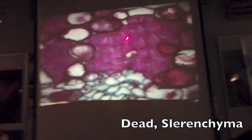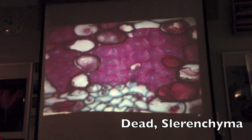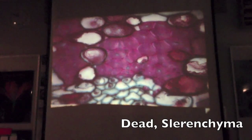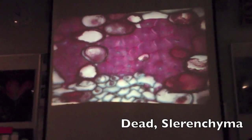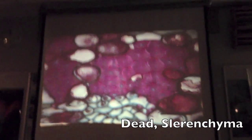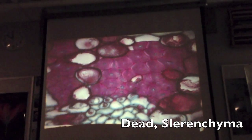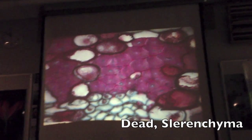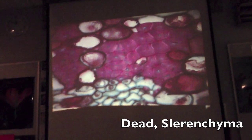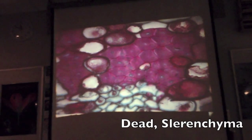What tissue is this? Is it dead or alive? Dead. It's got a really thick wall and it's dead. These are fibers, actually — they're longer than stone cells which are round. Fibers are long. But structurally they're the same, just longer.